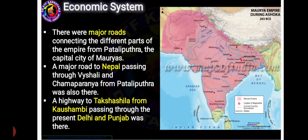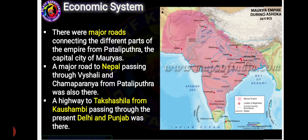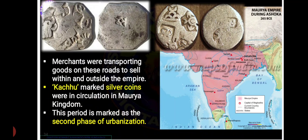Major road development took place and important cities were connected. Merchants transported goods through these highways. Silver coins called kachu were in circulation. The second phase of urbanization, or city development, also took place during this period.